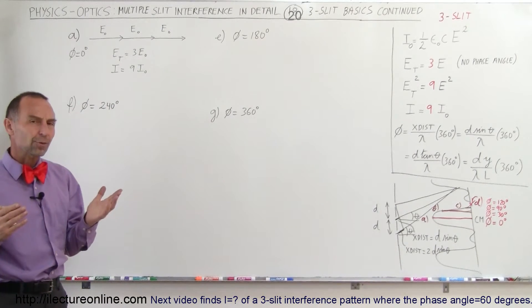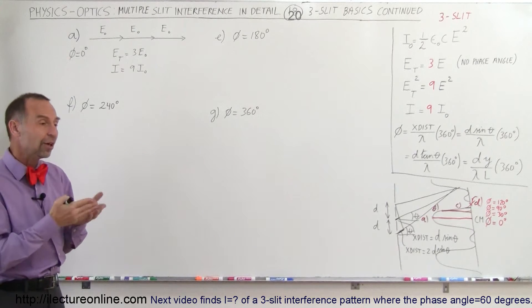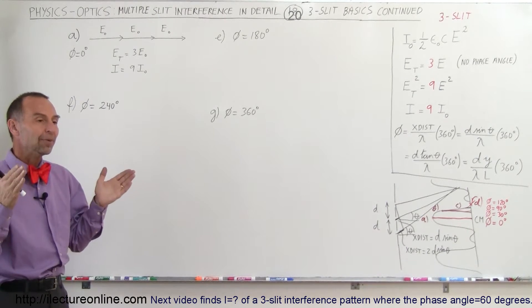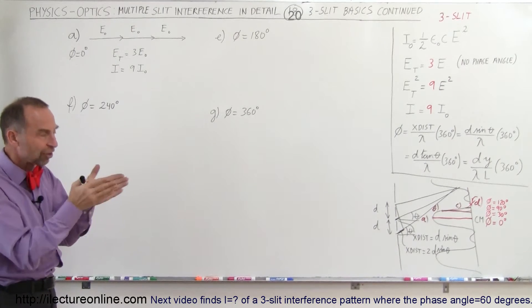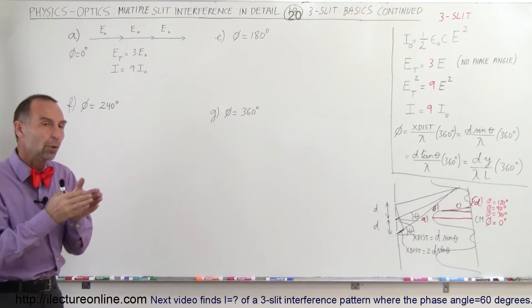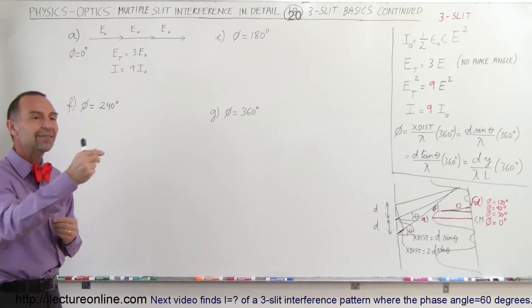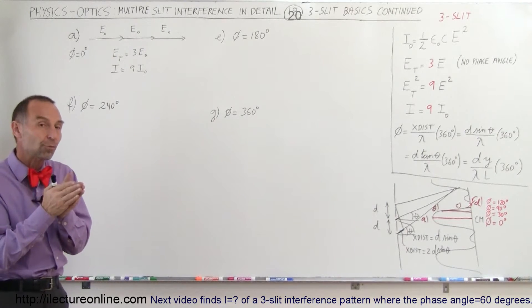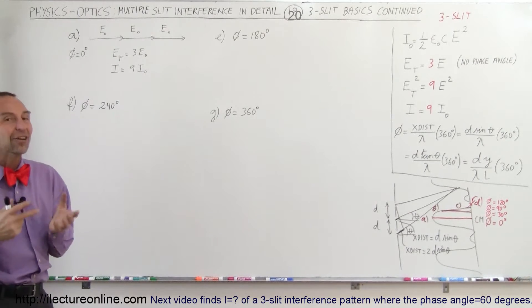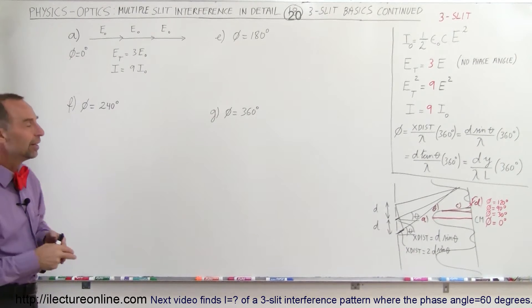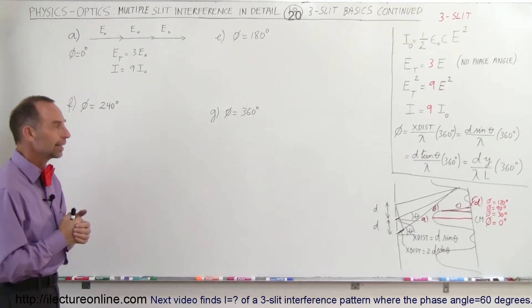It seems odd that you'd have nine times intensity with three slits and four times with two slits, but what happens is that the width of the beam or the width of the central maximum will be much narrower with multiple slits. So you have a higher peak intensity but a much narrower distribution — the total energy is still the same, so we don't get energy from nowhere.